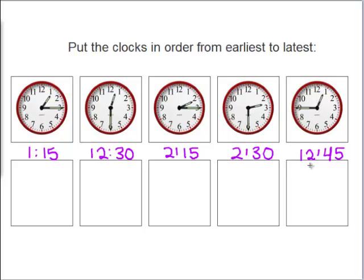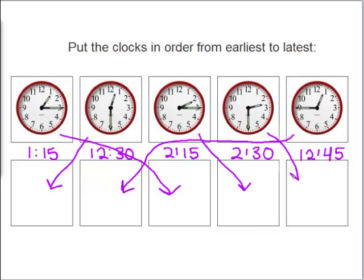Now, do you know which clock is the earliest time? Yes, it would be 12:30. And do we have another 12 time? Yes, we have the 12:45, and that would be next. And then we have a 1 o'clock one, which would go before the 2s. So that's third. And then 2:15 would be next. And our latest time would be 2:30.